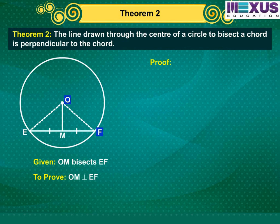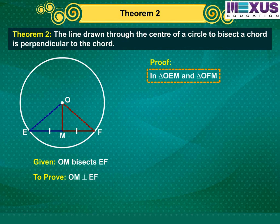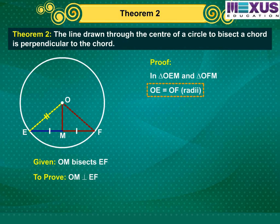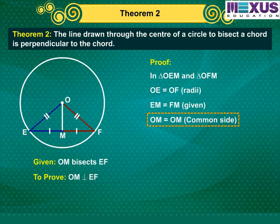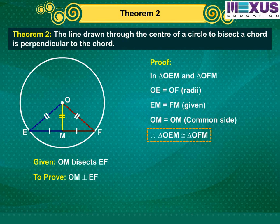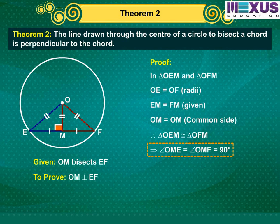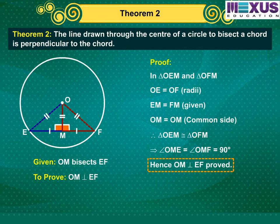Proof: Join OE and OF. In triangles OEM and OFM, OE is equal to OF, EM is equal to FM, OM is equal to OM which is common. Therefore, triangle OEM is congruent to triangle OFM. This gives angle OME is equal to angle OMF, which is 90 degrees. Hence, OM perpendicular to EF proved.